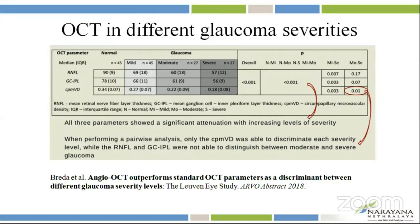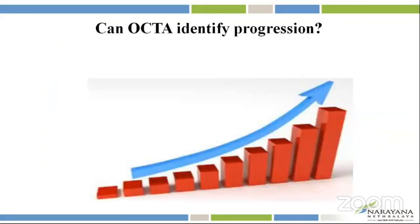Breda et al. studied the OCT measurements in different glaucoma severities. They studied OCT-RNFL, OCT-GC-IPL, and vessel density by OCTA. All three parameters showed significant attenuation with increasing levels of severity. But when they performed a pairwise analysis, only the vessel density was able to discriminate between each severity level, while the RNFL and the GC-IPL were not able to differentiate between moderate and severe glaucoma.